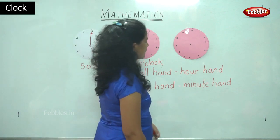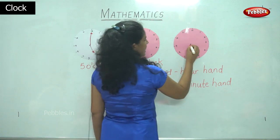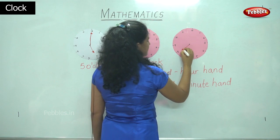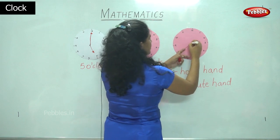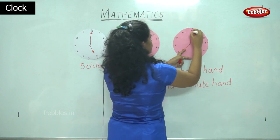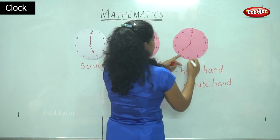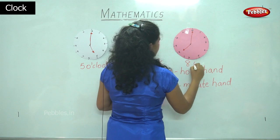When it is eight o'clock, the small hand or the hour hand points towards number eight and the long hand or the minute hand points towards number twelve, and the time is read as eight o'clock.